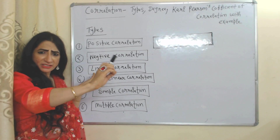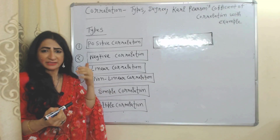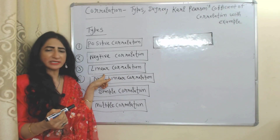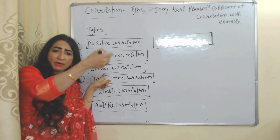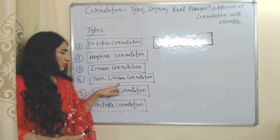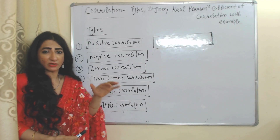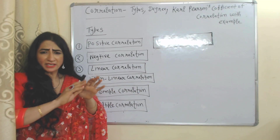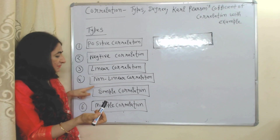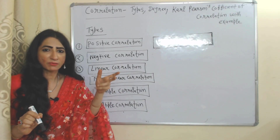When there is a constant relationship between two variables it will be called linear correlation — that means when two variables change at a constant rate. If you double one variable then the other also becomes double. But in non-linear correlation, two variables don't change at a constant rate.